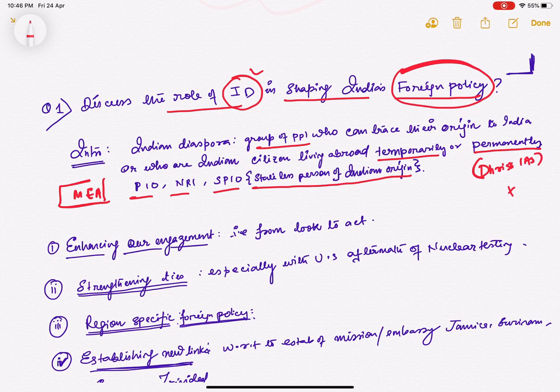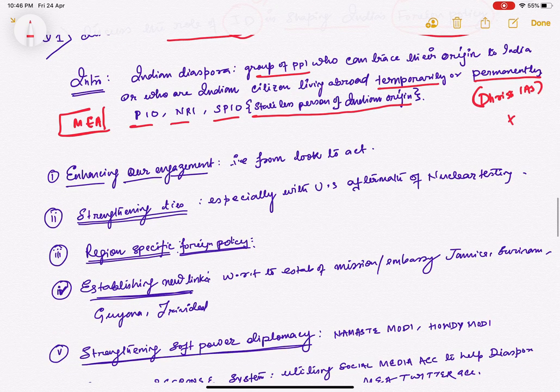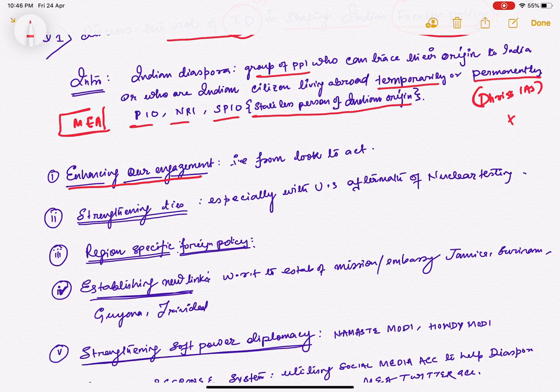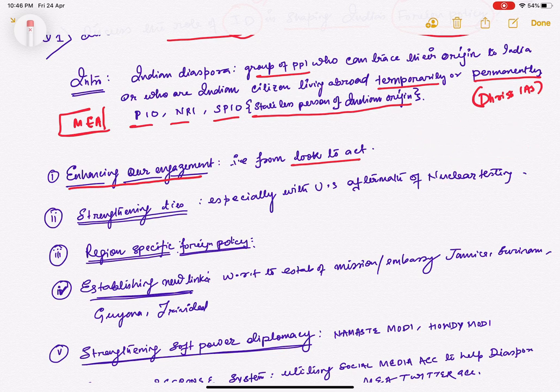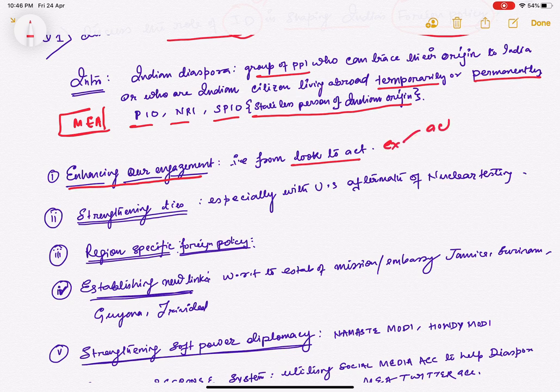How is the Indian diaspora influencing the Indian foreign policy? Let us understand this one by one. First, enhancing our engagement. How? From Look East to Act East. Most of you have heard about Look East and Act East. Look East was economic engagement. Act East is economic plus cultural engagement or people-to-people ties. Indian diaspora has influenced Indian foreign policy by going beyond economic ties to people-to-people and cultural ties. Examples: Act East and Act West policy.